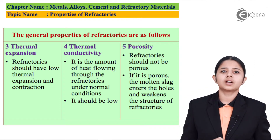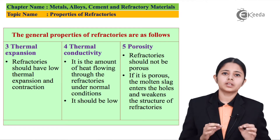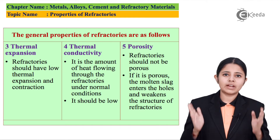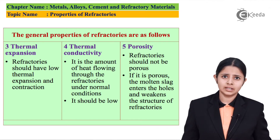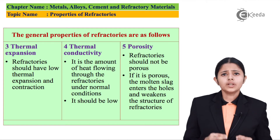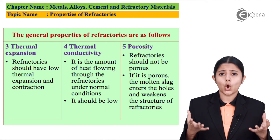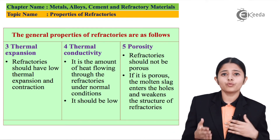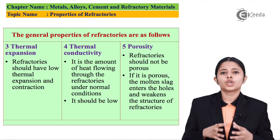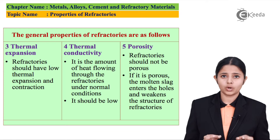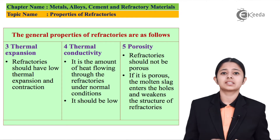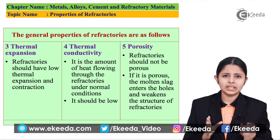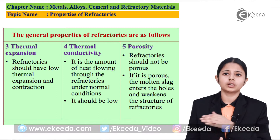The fourth property of the refractory is thermal conductivity. Thermal conductivity is the property of any material by virtue of which heat will flow through it. If a refractory lining inside a blast furnace has very good thermal conductivity, all the heat present inside the blast furnace can easily flow through it and go out. Then there is no point in maintaining such temperatures inside the blast furnace. So, for any refractory, it should have very low thermal conductivity — meaning heat should not flow through it, and even if it does, only a very small amount should flow through.